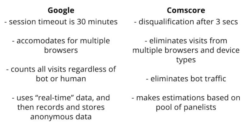For attribution, Google Analytics defines a session timeout as 30 minutes of inactivity, meaning 30 minutes of inactivity adds up to a new session, whereas Comscore defines it as a three-second window to qualify as a visit, and anything less leads to a disqualification.